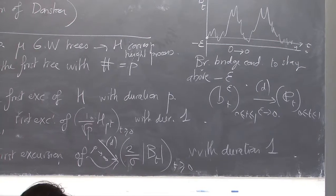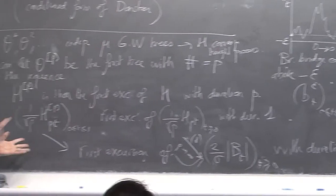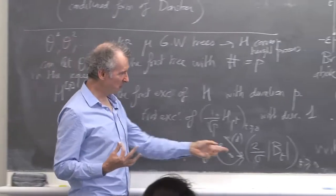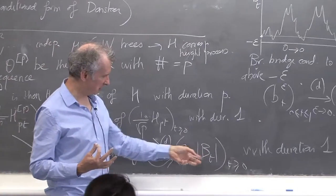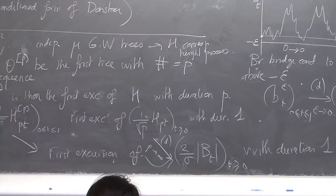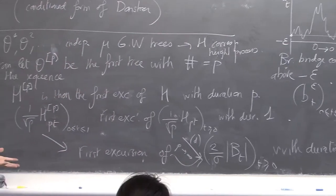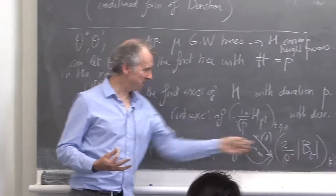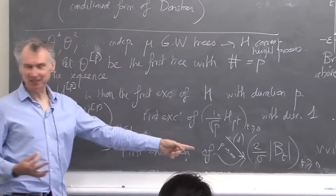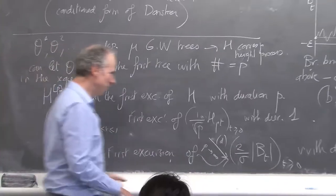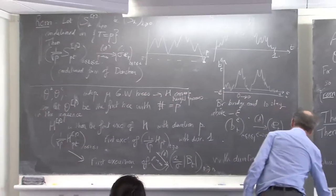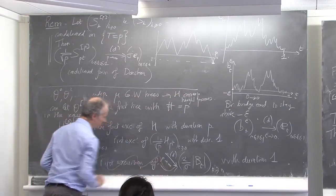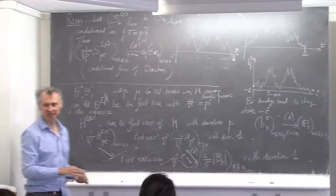However, this approach does not work here. The problem is that Brownian motion — or the absolute value of Brownian motion — has no excursion with duration exactly equal to 1. Such an object simply does not exist in the limit, so you cannot obtain the result this way. A different argument is needed.